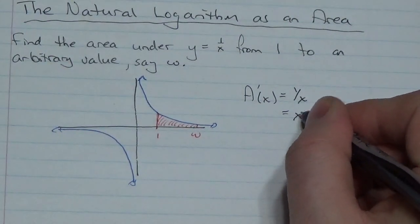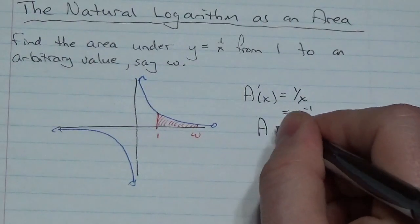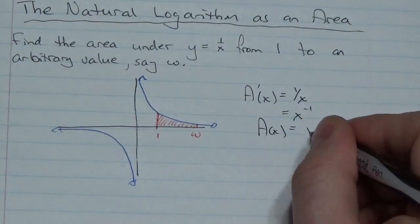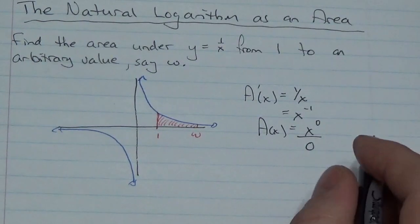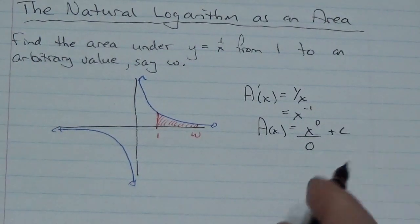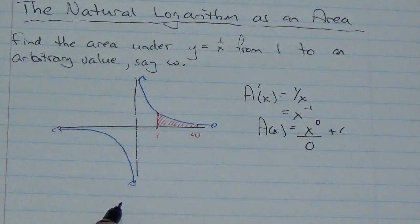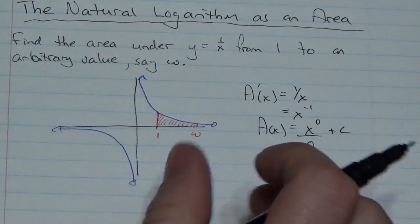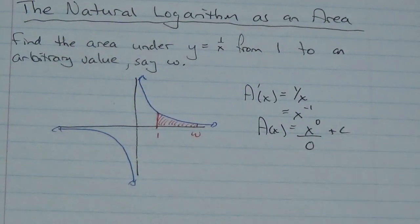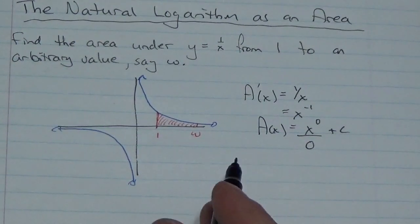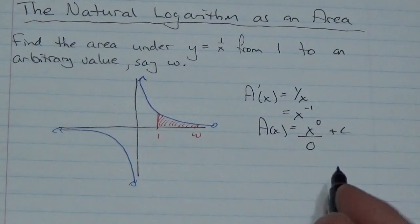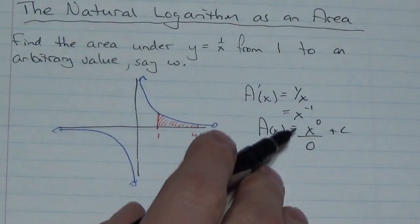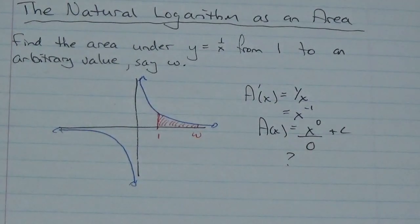Let's think about what we know about finding antiderivatives. We know that the derivative of the area function should equal 1 over x. We can rewrite that as x to the negative 1. To take the antiderivative, we increase the exponent by 1 and divide by the new exponent. But that doesn't work — it leads to an undefined value. So this approach is not helpful here.